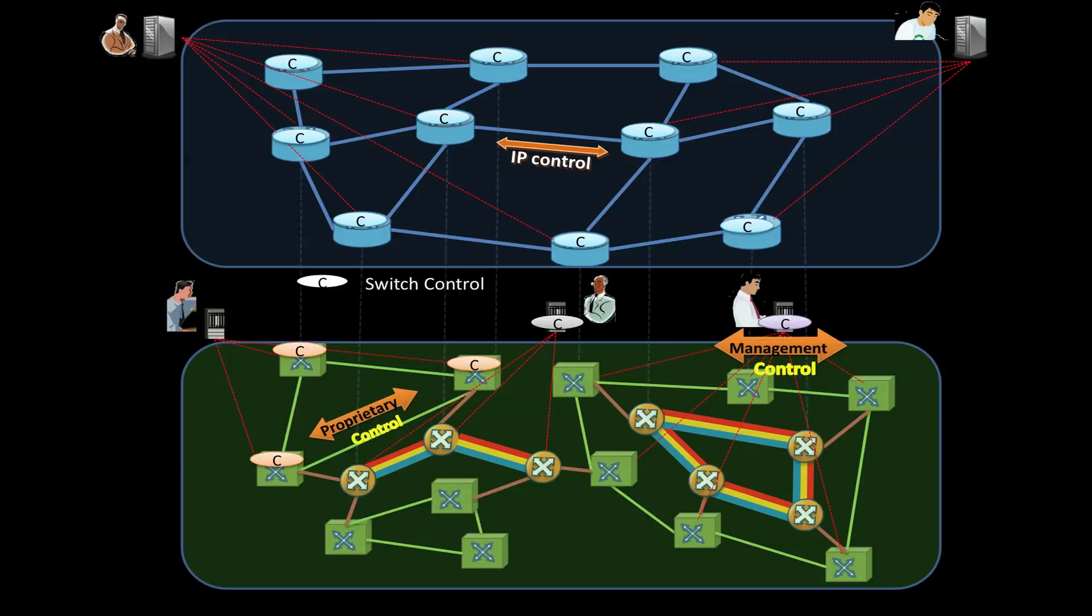Keeping two networks going also means duplicating resources and functionality and, as a result, extremely high capital and operational costs. This is a very expensive way to run a network.